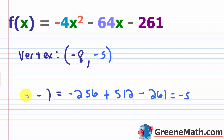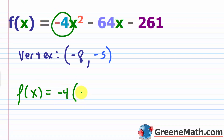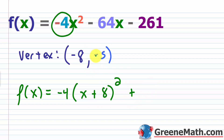To get the y coordinate, evaluate f(−8): (−4)(64) + (−64)(−8) + (−261) = −256 + 512 − 261 = −5. So the vertex is at negative eight comma negative five. Written in vertex form: f(x) = −4(x − (−8))² + (−5), or equivalently f(x) = −4(x + 8)² − 5.